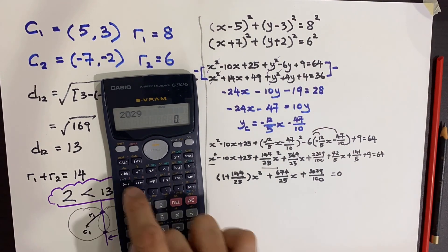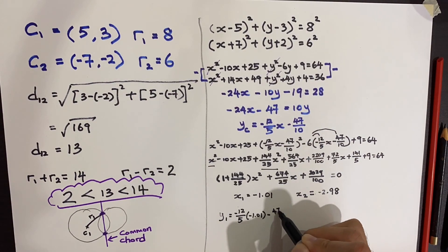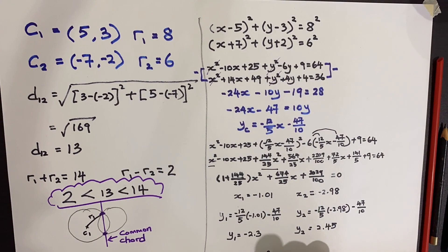Input the A, B, C values, solve it, and there you go. I find out what's the x₁ and x₂ values. The next thing I need to do is substitute back into the equation, the linear line equation, to find out the y values.